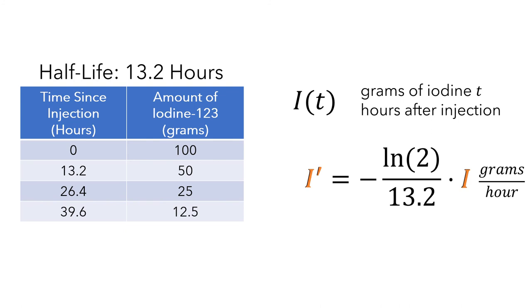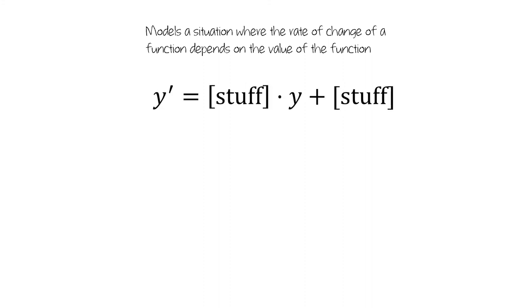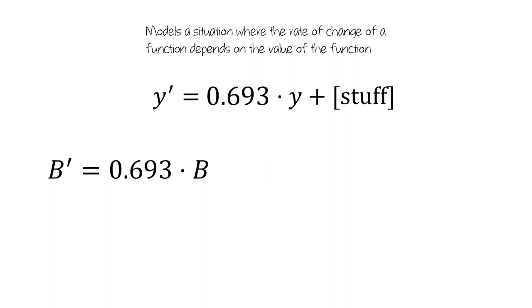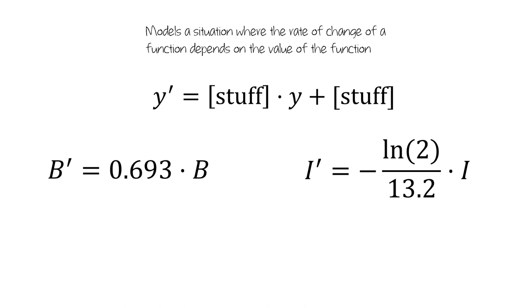To summarize what we've seen: a differential equation models a situation where the rate of change of a function depends on the value of the function. The differential equations we've been looking at are all of the form y' equals some stuff times y plus some other stuff. For example, in the bacteria equation we multiplied the function by 0.693 and added 0. In the iodine decay equation, we multiplied the function by negative natural log of 2 divided by 13.2 and added 0. In upcoming videos, we'll look at how to create these differential equations in more detail.